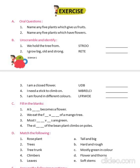Unscramble and identify: I hold the tree from roots, I grow big, old and strong — this is a tree. I am a closed flower — this is a bud. I need a stick to climb on — this is a climber. I am found in different colors — these are flowers.